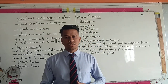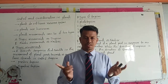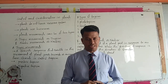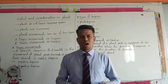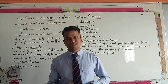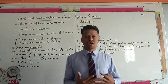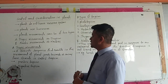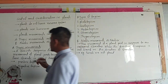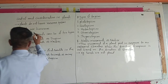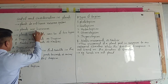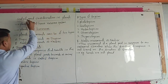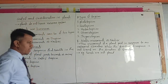So when changes are found in the environment, plants can respond and react. But how do plants respond and react? They do not possess a nervous system, but plants use hormones for their control and coordination.